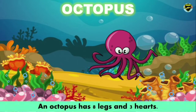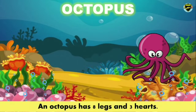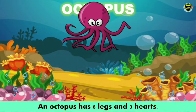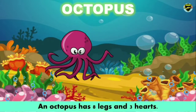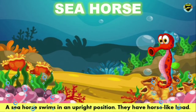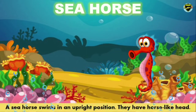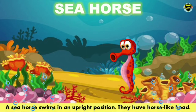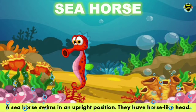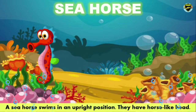Octopus. An octopus has eight legs and three hearts. Sea horse. A seahorse swims in an upright position and they have a horse-like head.